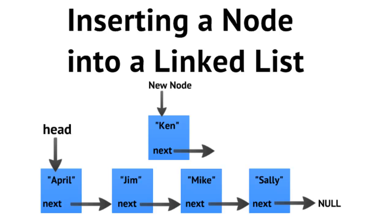The second case is when we already have something at the head of our linked list, but we want to add our new node at the head. The third case is when we want to insert a node into a linked list that already has at least one node, but we're not interested in adding it at the head — we want to insert it somewhere else in the linked list.